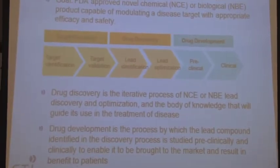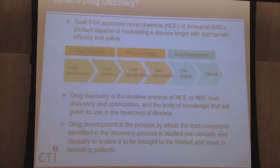Drug discovery's goal is to get to a compound — either a biologic like a protein therapeutic or a small molecule chemical compound — that's capable of modulating the disease with enough efficacy to be of value to the patient, but also safe with minimal side effects. All drugs have side effects; it's just a question of what the side effect profile is. The stages include target identification and validation, lead identification, lead optimization, turning a candidate into something that looks and feels like a real drug, and then the preclinical and clinical aspects of development.